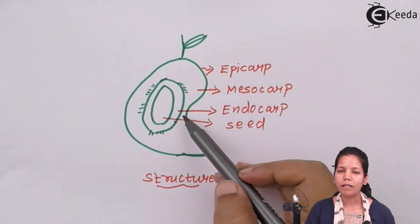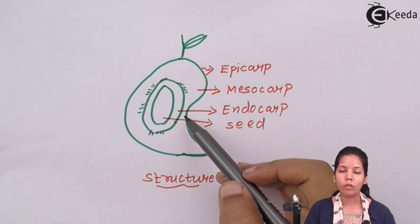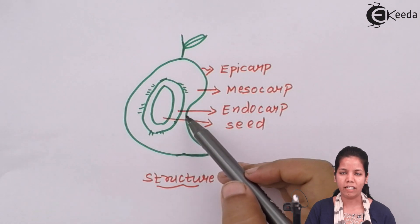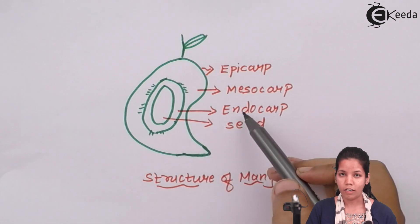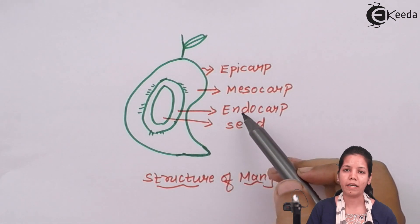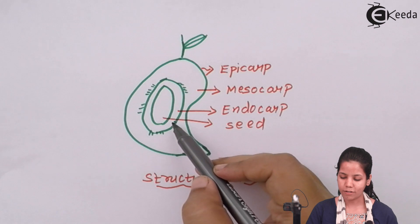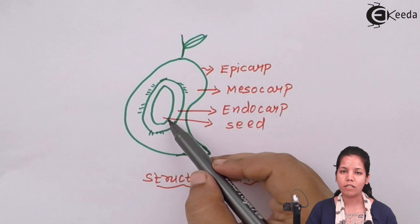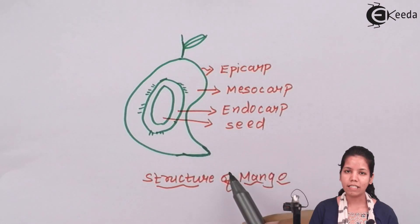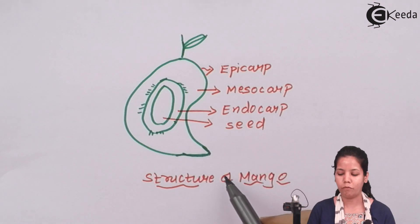The endocarp is the cotyledonous region. The thick part we think of as the mango seed is not actually the seed—it's the cotyledon or embryo that protects the seed. Inside this embryo is the actual mango seed, which is dicot and consists of two cotyledons. This is the structure of mango.